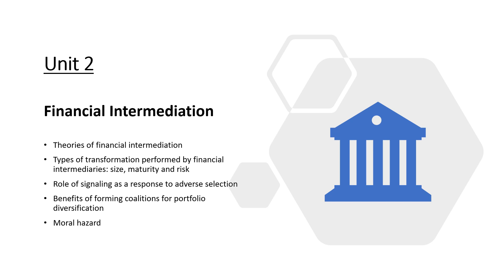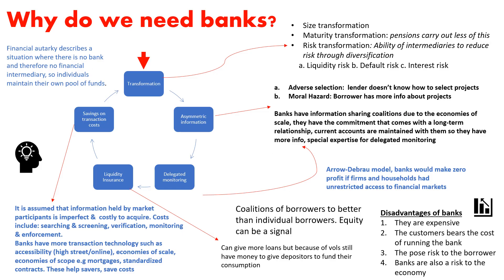Unit 2 is one of my favourite units: financial intermediation. In this unit we'll be exploring the theories of financial intermediation, the types of transformation performed by banks, the role of signalling as a response to adverse selection, the benefits of forming coalitions for portfolio diversification, and moral hazard. The central question is: why do we need banks at all? The Arrow-Debreu model says banks would make zero profit if firms and households had unrestricted access to financial markets, and financial autarky describes a situation with no bank where individuals maintain their own pools of funds.